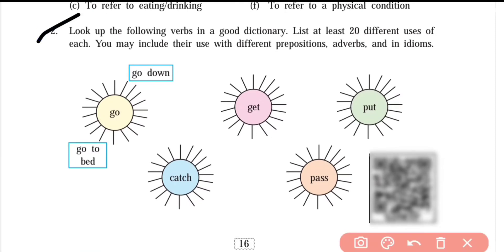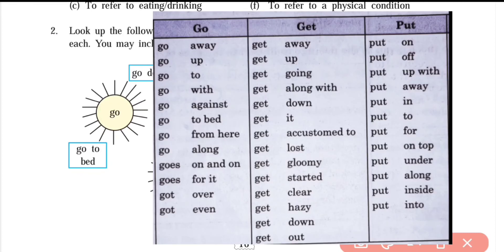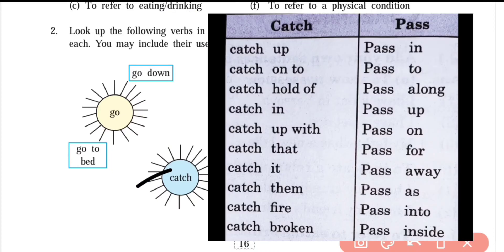Question number 2: Look up the following verbs in a good dictionary. List at least 20 different uses of each — you may include their use with different prepositions, adverbs, and in idioms. The first three verbs are Go, Get, and Put — their answers will be in front of you. And Catch and Pass — their answers are also in front of you.